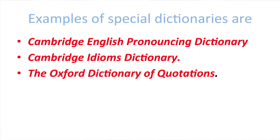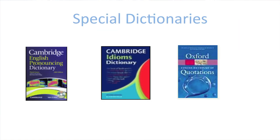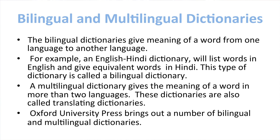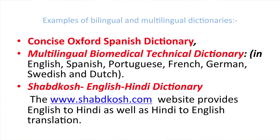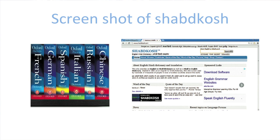Examples of special dictionaries are Cambridge English Pronouncing Dictionary, Cambridge Idioms Dictionary, and the Oxford Dictionary of Quotations. Bilingual dictionaries give the meaning of a word from one language to another language. For example, an English-Hindi dictionary lists words in English and gives equivalent words in Hindi. A multilingual dictionary gives the meaning of a word in more than two languages. These dictionaries are also called translating dictionaries. Oxford University Press brings out a number of bilingual and multilingual dictionaries, such as the Concise Oxford Spanish Dictionary.